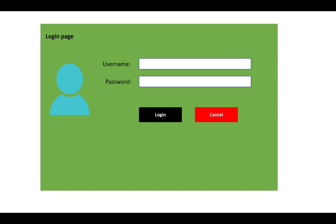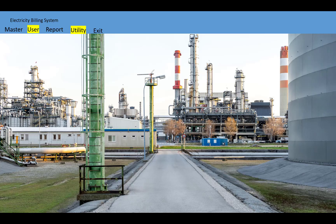Here we have a username and password — the screen will display the login details. After the admin logs in, you will see a menu strip on top of the main form with master, user, report, and utility options along with an exit button. When we click on the user menu, we will see a dropdown with new user, customer details, and deposit details.